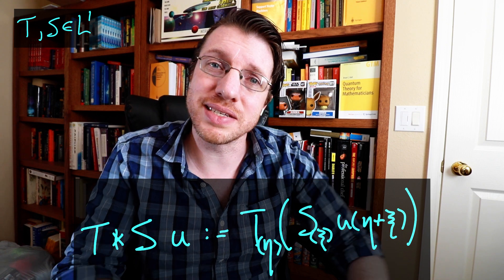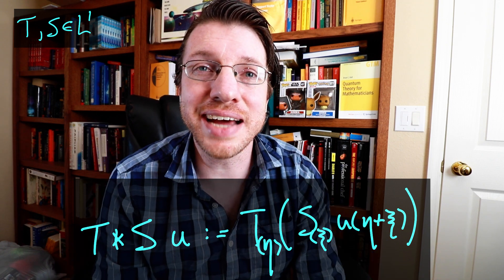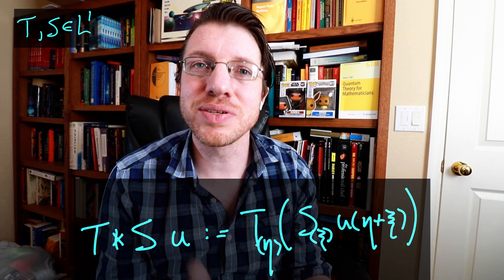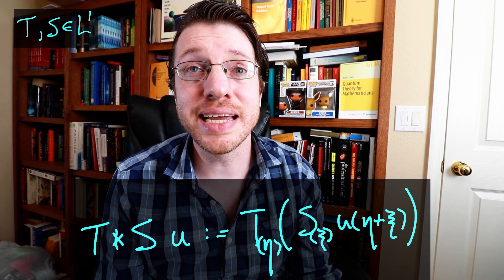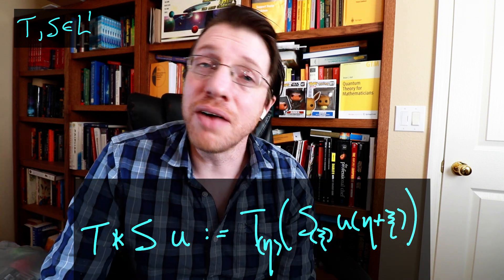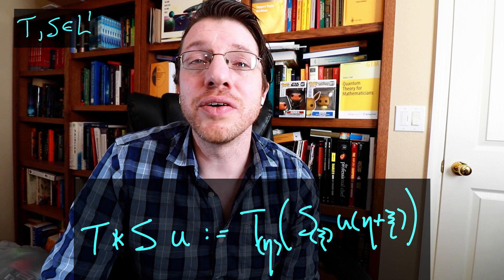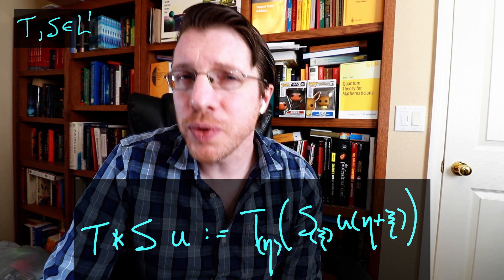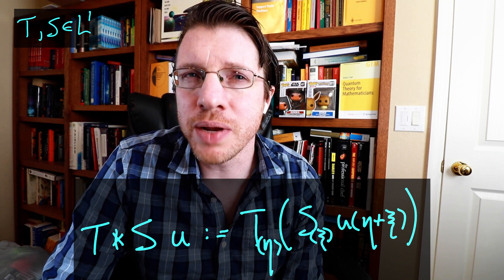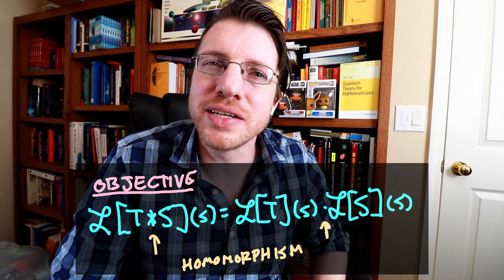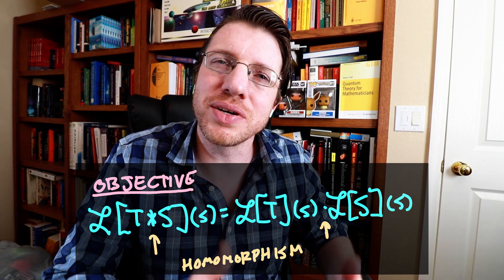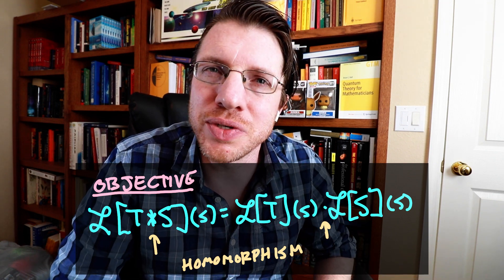For instance, if I have distributions T and S, I apply S with respect to one variable first, then apply T with respect to the other variable — that is the convolution of two distributions. But for it to really be a convolution of distributions, we want one very important property: the Laplace transform applied to this convolution should equal the product of the Laplace transforms of the individual distributions.